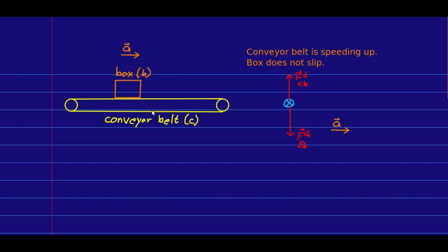Here's a box on a conveyor belt, and the conveyor belt is speeding up, and the box does not slip. So it's being carried along by the conveyor belt at the increasing speed of the conveyor belt. We know that the free-body diagram for the box will have a perpendicular force by the conveyor belt and a gravitational force by the earth.